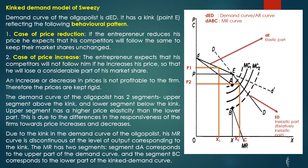The demand curve is D-E-D. This is a conventional demand curve that is downward sloping. Point E is the kink point. The demand curve has two segments: the upper segment is above the kink and the lower segment is below the kink.